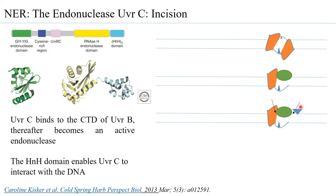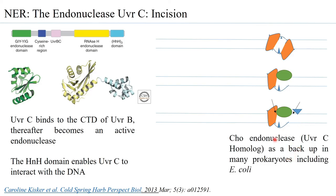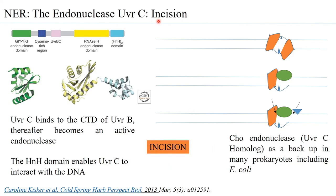Another molecule called the CHO endonuclease is present in several prokaryotes as a backup and is a UVR-C homolog. This CHO endonuclease makes cuts even farther from the place where UVR-C cuts — about four more base pairs away from the base lesion. It is considered part of the NER pathway and can carry out incision at the three prime end of the base lesion.